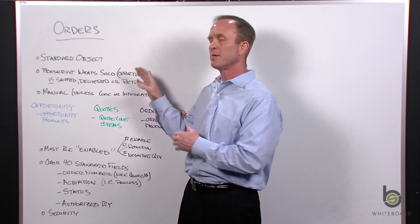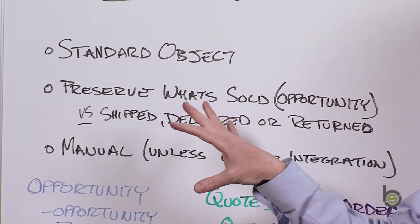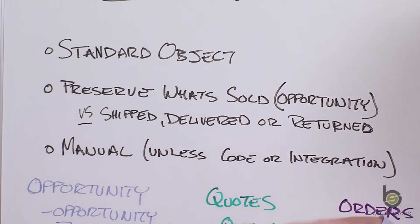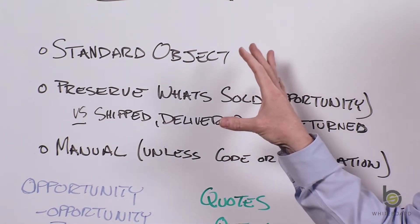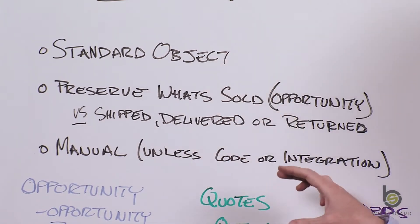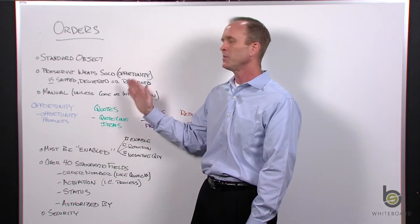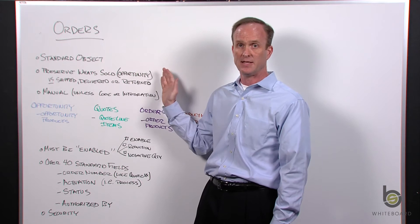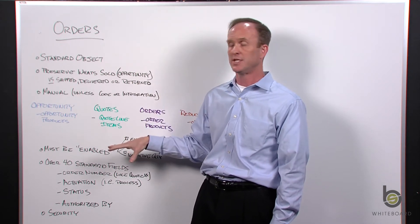What happens is you're not preserving what has been sold versus what has been shipped or returned. Orders are essentially another table in the Salesforce database that we can split what was sold in an opportunity and preserve that maybe for commissions and forecasting versus what has actually been delivered or returned by the client. Really, we're preserving data in the database by using the orders table.